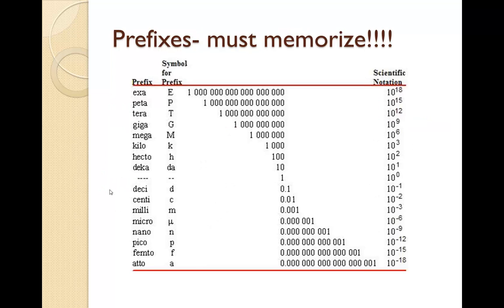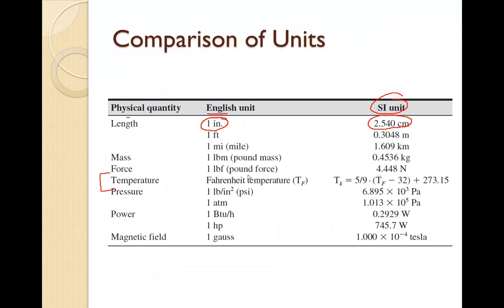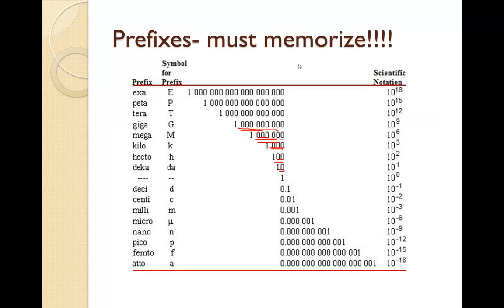These are prefixes for the SI and metric units, and you do need to memorize them. Notice it's always a base of ten that it increases: ten, one hundred, add another zero and it's a thousand, add three more zeros and it's a million, add three more zeros and it's a billion. It's unlike the English units where the numbers are kind of odd — one foot is 0.3048 meters, or one sixteenth of an inch rather than 0.1 in centimeters. So it's a much easier way of dealing with numbers.